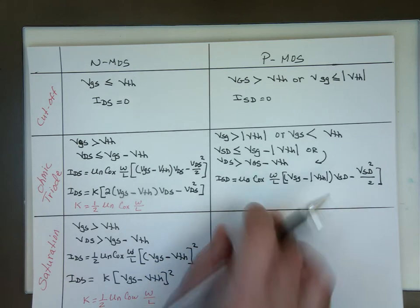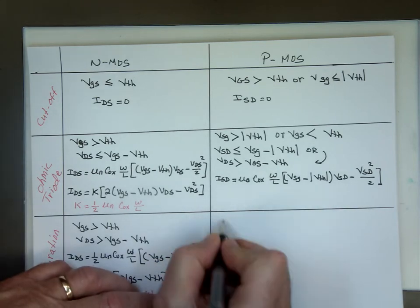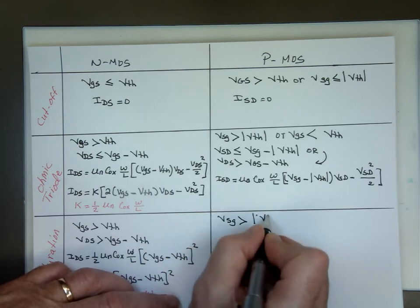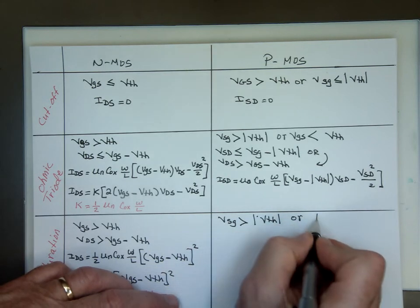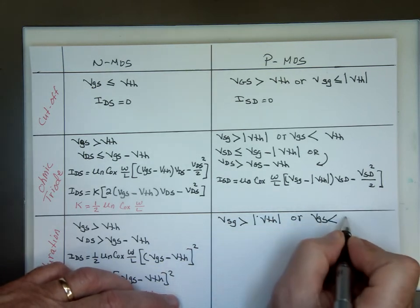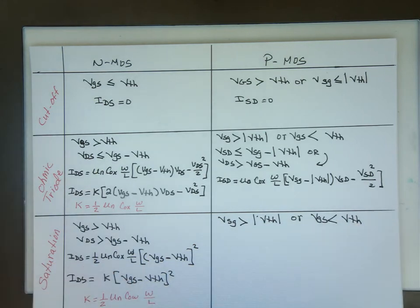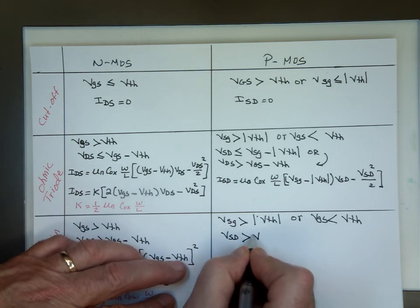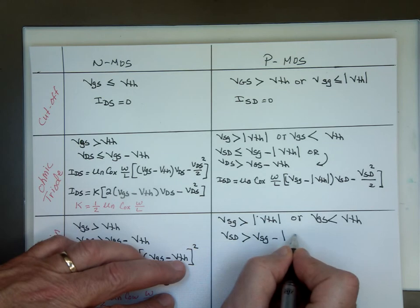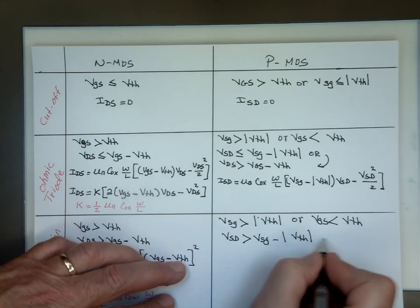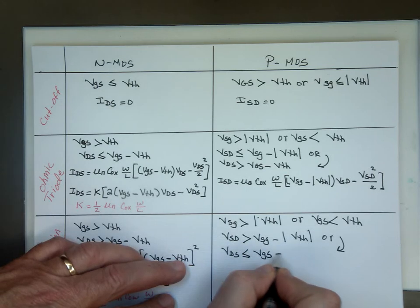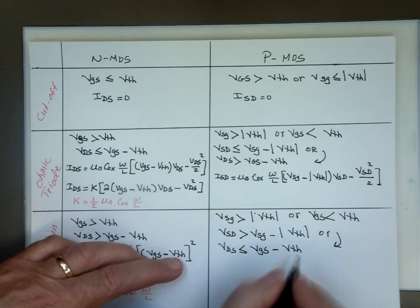And if you're in this mode here which means VSG greater than absolute value of VT, or VGS is less than V threshold, and VSD greater than VSG minus the V threshold absolute value, or VDS is less than or equal to VGS minus VT, and ISD is equal to one half μn or μ0, whatever you want to call it, Cox W over L.